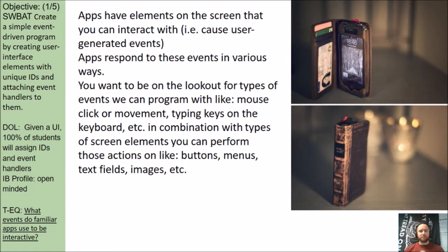Apps have elements on the screen that you can interact with, and apps respond to these events in a variety of ways. Be on the lookout for types of events we can program, like mouse clicks or movements, typing keys on the keyboard, or combinations of screen elements you can perform actions with — such as combinations of buttons, menus, text fields, etc.